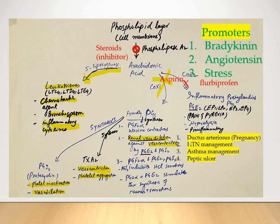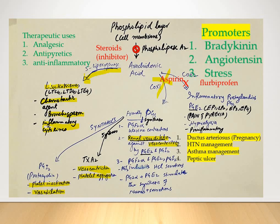Regarding asthma management, as we discussed, you cannot use NSAIDs in patients with a history of asthma, as it will shift the equilibrium to the left and may aggravate the asthma condition. As for therapeutic uses, NSAIDs are used as analgesics, antipyretics, and for anti-inflammatory purposes.